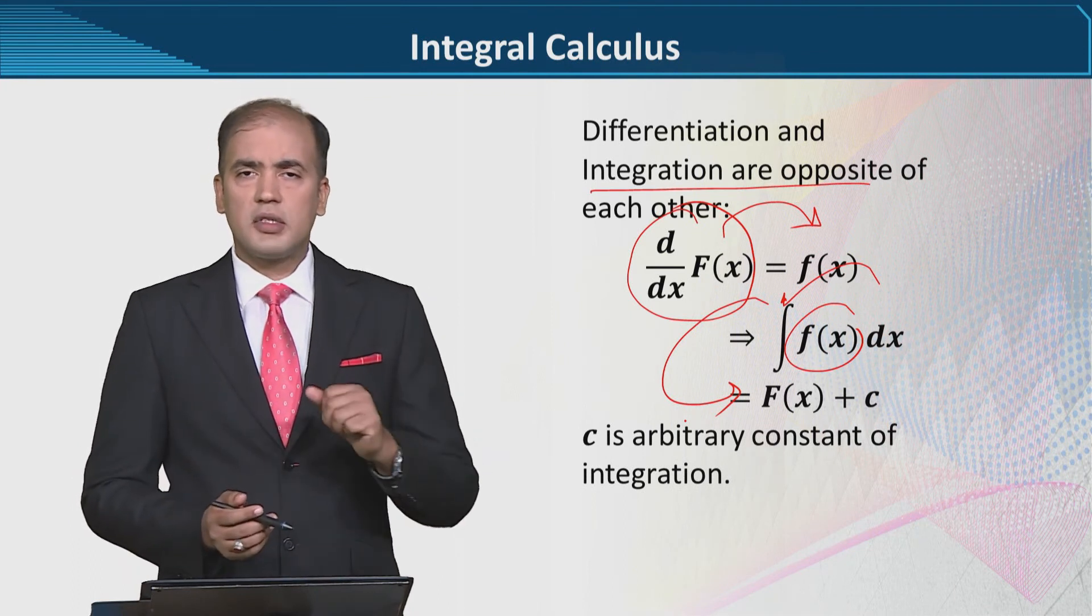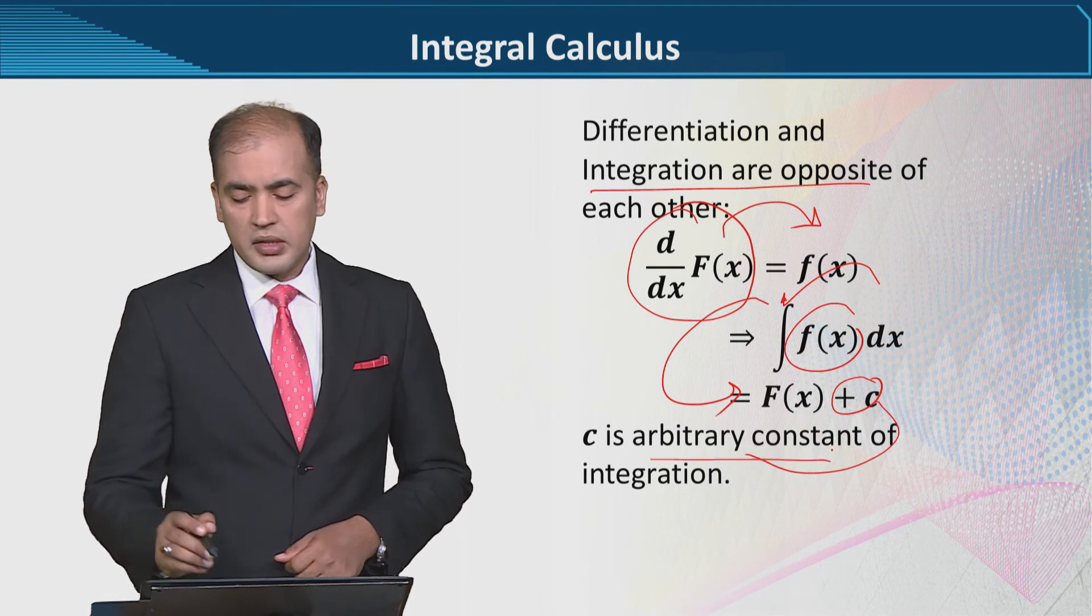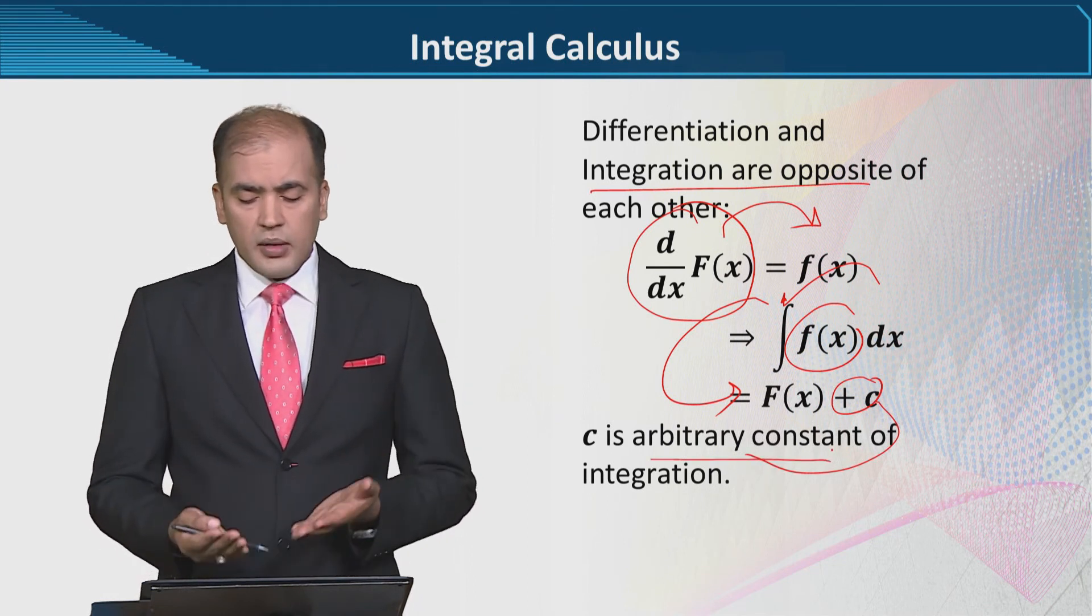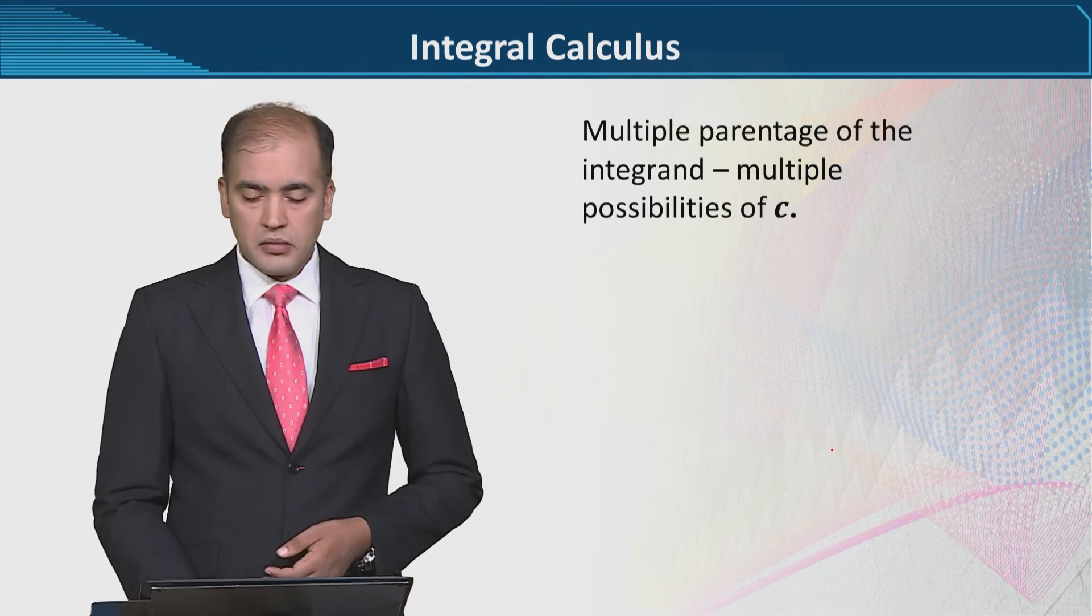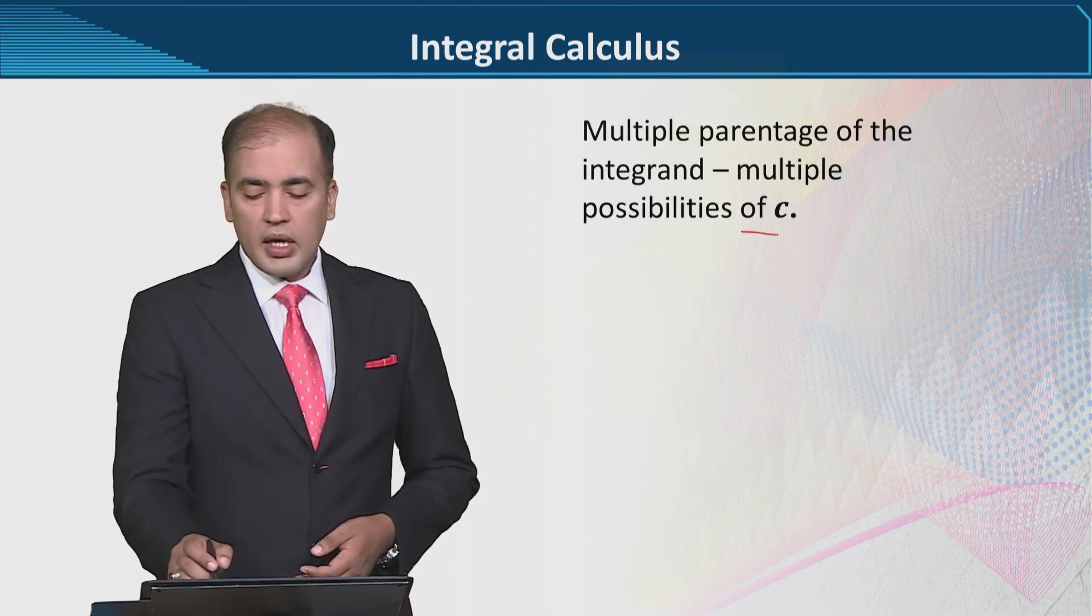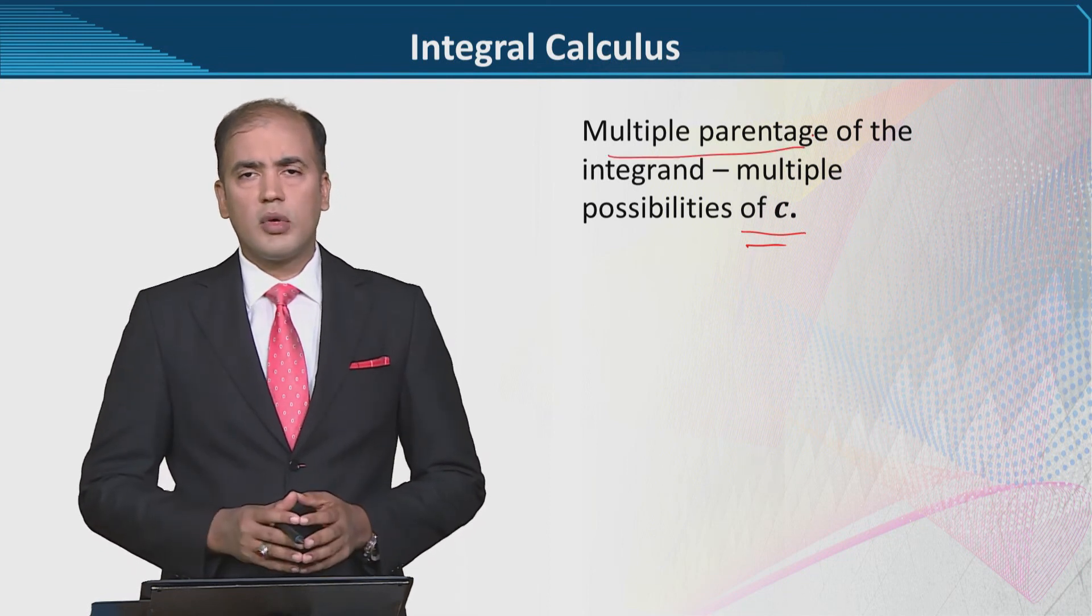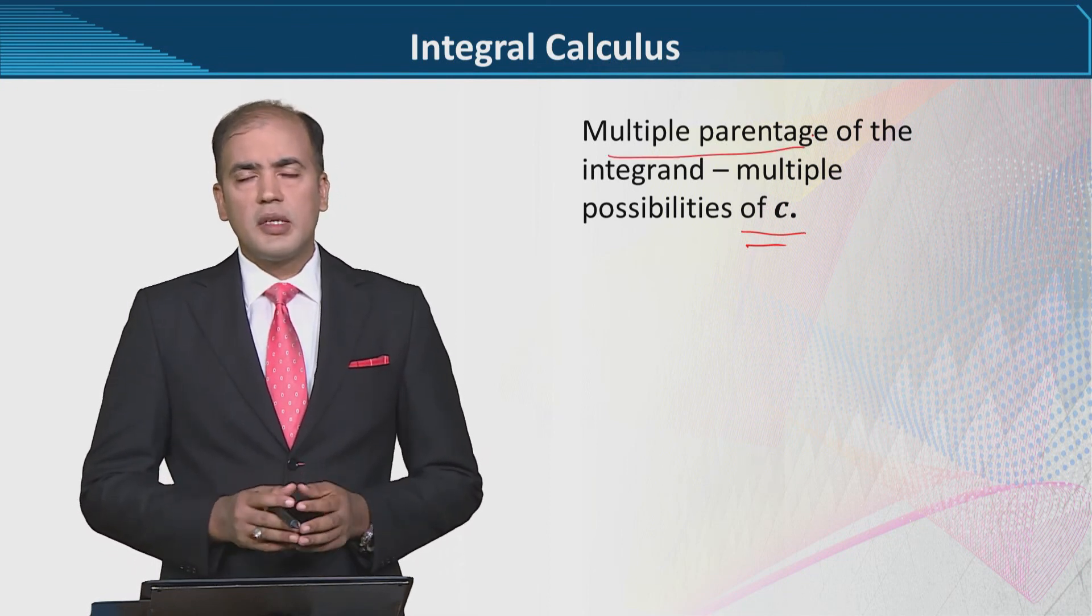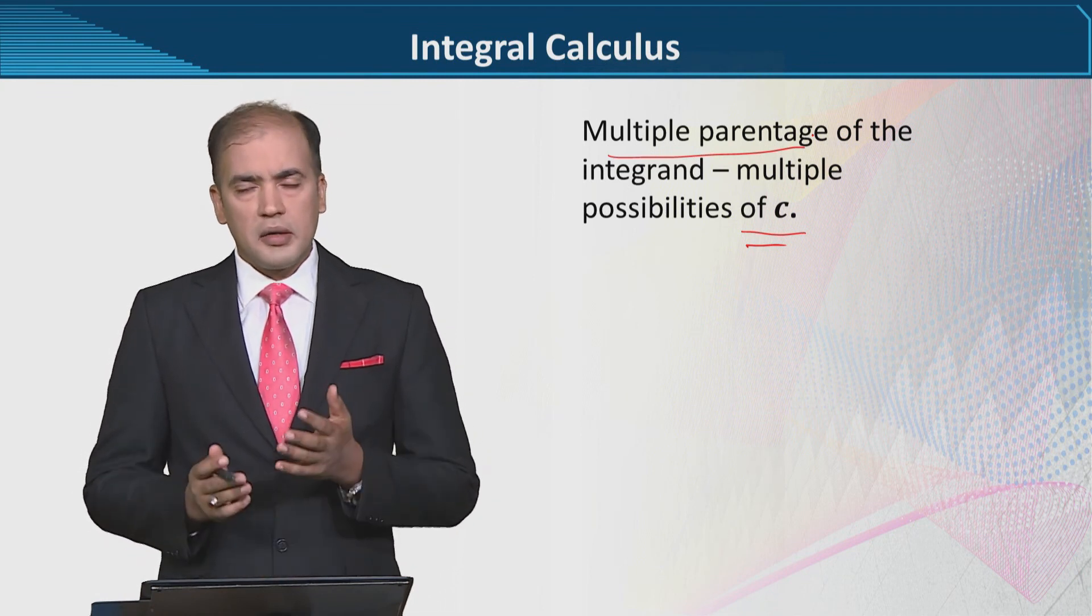So aapne dekha aapne recover kar liya original function ko. Or yeh jo c nazar aa raha hai, that is the arbitrary constant. Iske upar hum kuch baat kar chuke hain in the previous lectures. Or yeh jo c hai, iske upar bhi hum pehle baat kar chuke hain. Ke multiple parentage ho sakta hai. Iska matlab yeh hai ke original function mein c ki multiple values ho sakti hain. Usmein se koi ek value real value hogi.